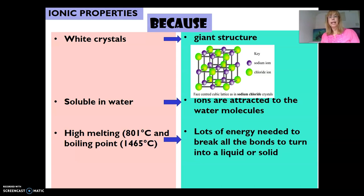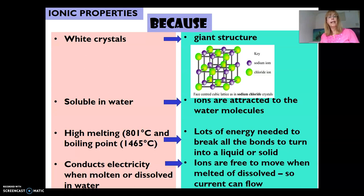Finally, why does it conduct electricity when molten or dissolved in water? Because when it's in the form of ions, it's free to move, and it's only in the form of ions when you melt it or dissolve it in water. Only then can the current flow. That brings us to the end of ionic bonding. In the next video we'll look at covalent bonding.